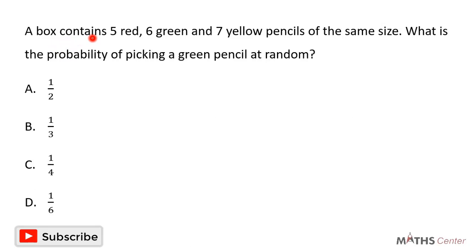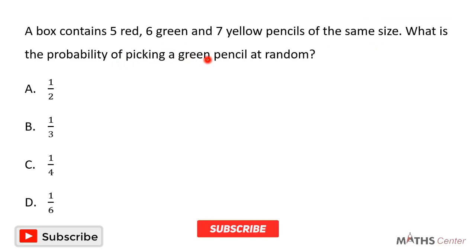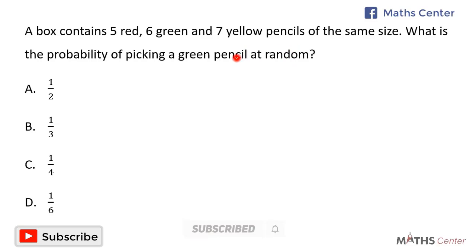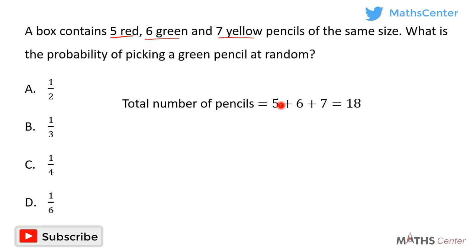A box contains 5 red, 6 green, and 7 yellow pencils of the same size. What is the probability of picking a green pencil at random? This is a multiple choice question. The total number of pencils is 5 plus 6 plus 7, which equals 18.